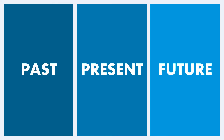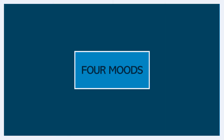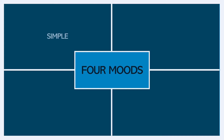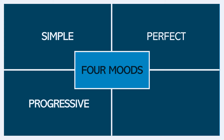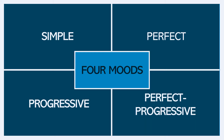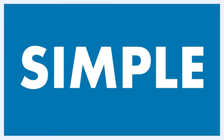Most people know that there are three tenses: past, present, and future. However, in addition to the three tenses, there are four moods: the simple mood, the perfect mood, the progressive mood (also known as the continuous), and the perfect progressive mood. Of these four moods, the most common one is the simple mood, so let's take a look at how that functions.